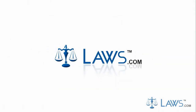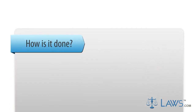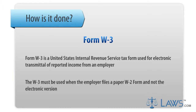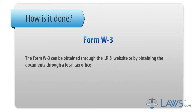Laws.com Legal Forms Guide. Form W-3 is a United States Internal Revenue Service tax form used for electronic transmittal of reported income from an employer. The W-3 must be used when the employer files a paper W-2 form and not the electronic version. The Form W-3 can be obtained through the IRS's website or by obtaining the documents through a local tax office.